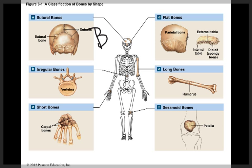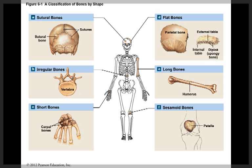Bones also produce blood and blood cells. Red blood cells, white blood cells, and other elements are produced in the red bone marrow.